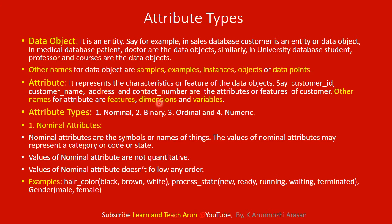In data mining, attributes have different types. The main types are: nominal attributes, binary attributes, ordinal attributes, and numeric attributes.